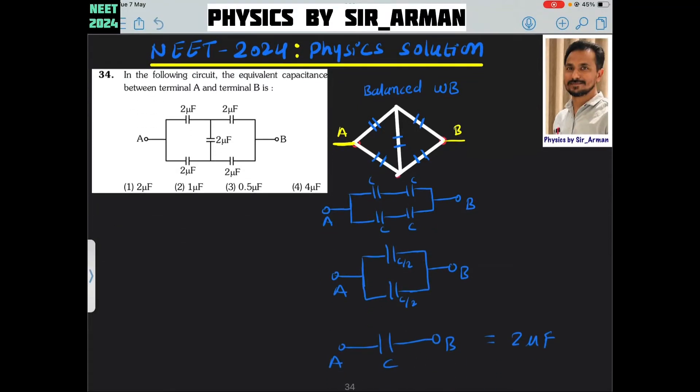Question number 34. In the following circuit, the equivalent capacitance between A and B. We have to find the equivalent capacitance between A and B.